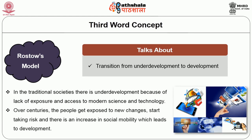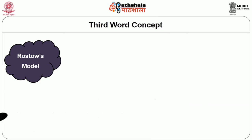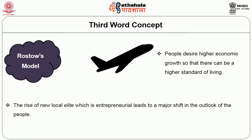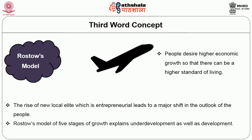Gradually, over the centuries, people get exposed to new challenges, start taking risks and there is an increase in social mobility, which leads to development. In the take-off stage, people desire higher economic growth for a higher standard of living. An increase in urbanization is a sign of moving towards development. The rise of a new entrepreneurial local elite leads to a major shift in the outlook of the people. Rostow's model of five stages of growth explains both underdevelopment and development.